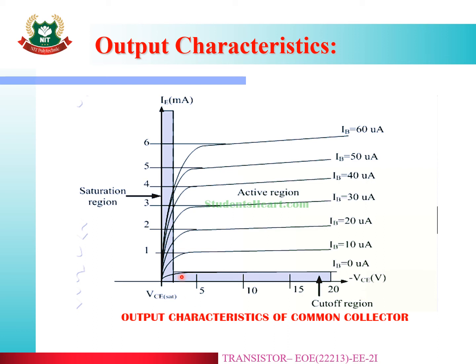The output characteristics graph consists of the active region, saturation region, and cutoff region. The breakdown region is the cutoff region. In the saturation region, the transistor just switches on, and in the active region it works as an amplifier. At a high current level the current flow is higher, but at the breakdown point the current remains at a constant level — that is the output characteristics of the Common Collector.